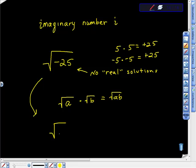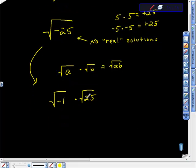The square root of negative 25 is the same as the square root of negative 1 times the square root of 25. Now, hopefully, we have an answer here. The square root of 25 is 5, isn't it?